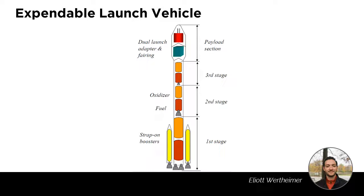What do current expendable multi-stage launch vehicles look like? Basically the ones used by Ariane and Soyuz, and the type that SpaceX is trying to eliminate by allowing stages to land and rockets to be reusable. This picture represents an expendable launch vehicle equipped with three stages, the last one carrying the payload section. As you can see, the first stage is much bigger than the other stages and carries a liquid engine and strap-on boosters.